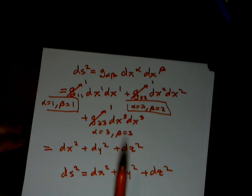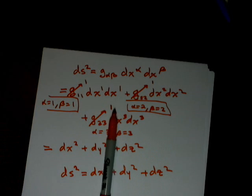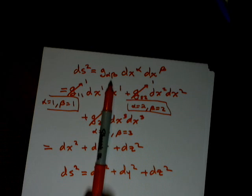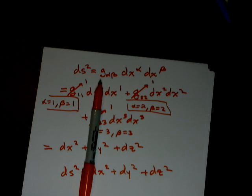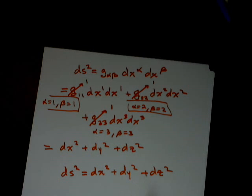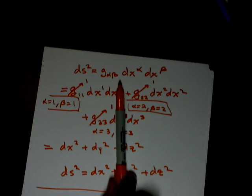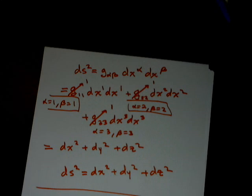Using this index notation simplifies our math a lot, because we don't have to write a lot of terms since many components of the metric are zero. There are 9 terms total — you could write them all — but 6 of them disappear because they're zeros, and only 3 survive along the diagonal. Hopefully this gives you a feel for this summation notation.